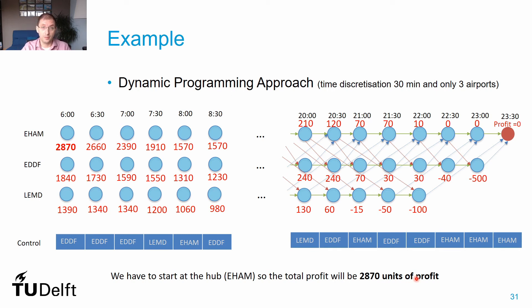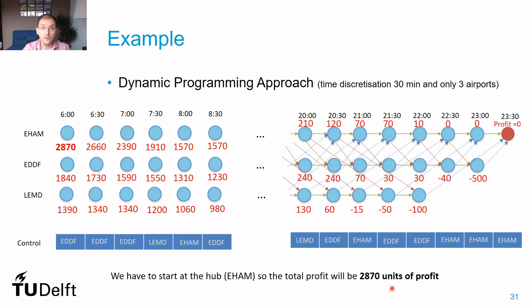This time-space network represents all routing possibilities. By completing the backward computation, we know the total profit for this aircraft type: being at the hub in Amsterdam at 6 am yields a profit of 2,870 monetary units. We then follow the maximum-profit path from the initial node to the end node using the greedy policy, always choosing the option that brings the most profit.